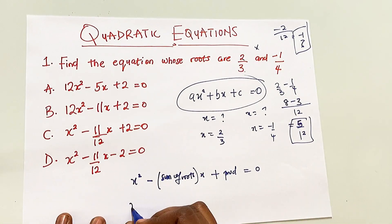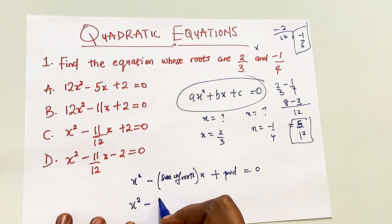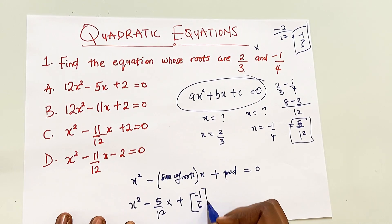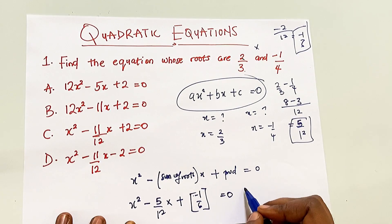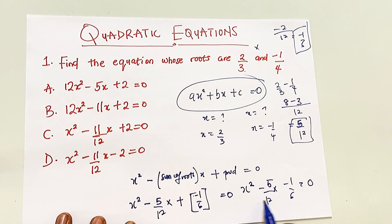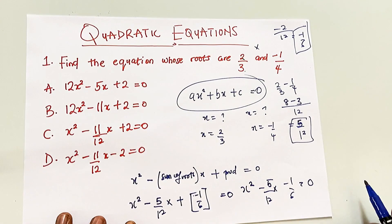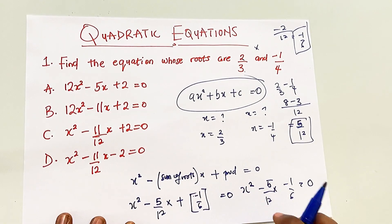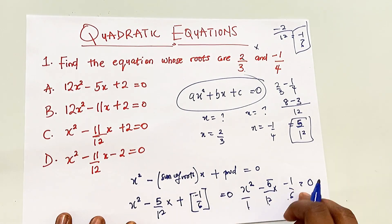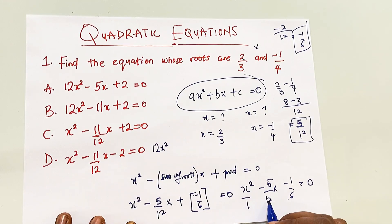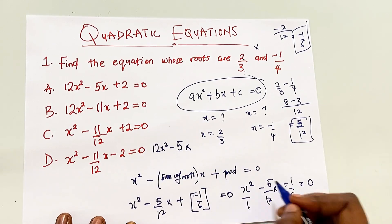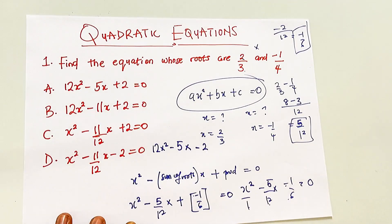So the sum of our roots is 5/12 and the product is -1/6. Bringing it into the equation: x² minus (5/12)x plus (-1/6) = 0, which gives x² - (5/12)x - 1/6 = 0. To eliminate the fractions, multiply every term by the LCM of 1, 12, and 6, which is 12. So 12x², then -(5/12)x × 12 becomes -5x, and -1/6 × 12 becomes -2, giving us -2 = 0.